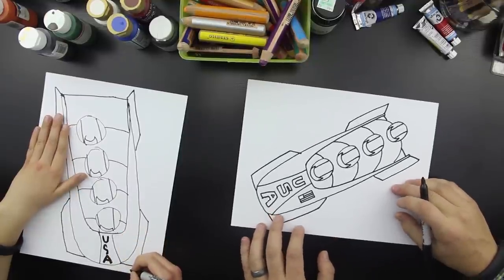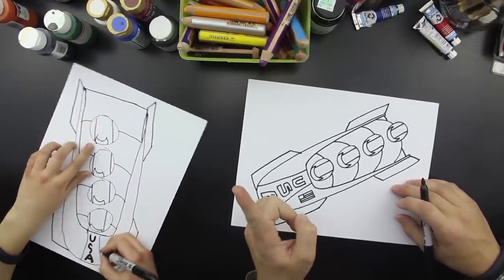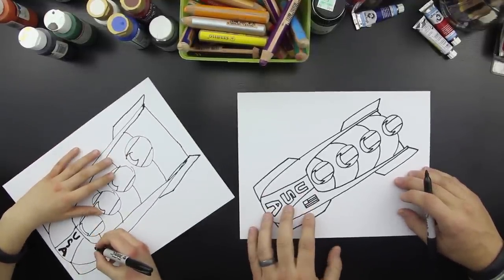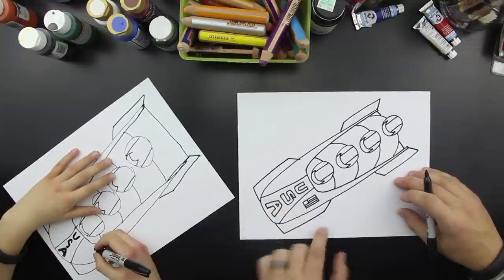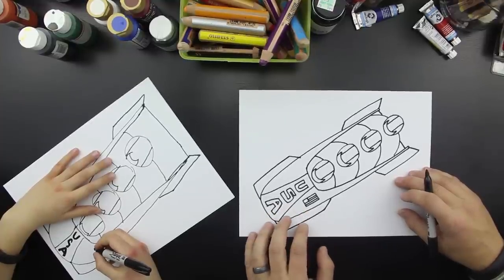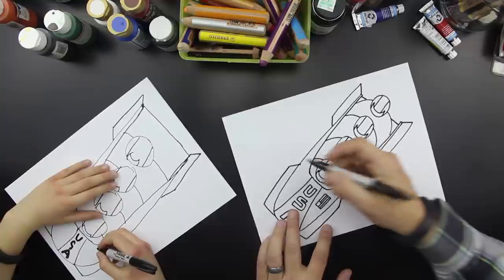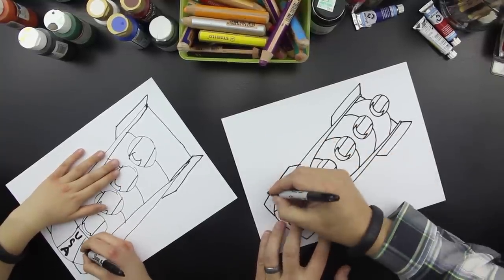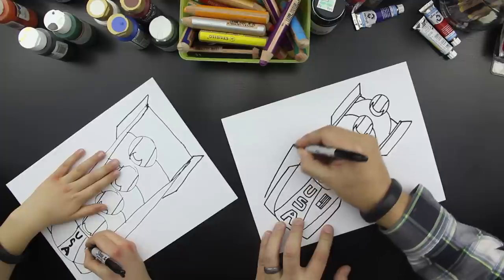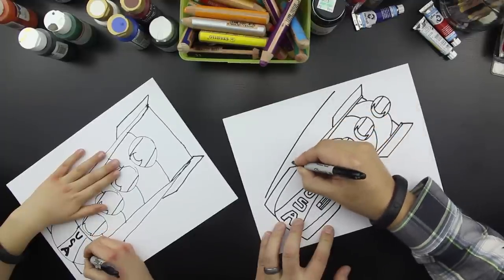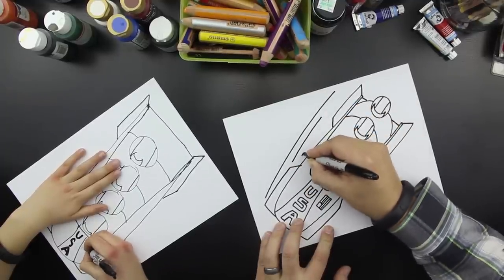We're missing one thing. What are we missing? Does it look like it's going slow or fast? It looks like it's just standing still. So we could draw fast lines coming off the side of it.